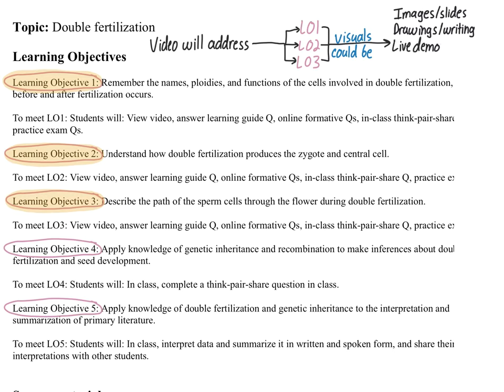Now is the time when I should decide what form I want my visuals to take. The visuals could be any number of things: images from a textbook, the internet, or photographs you take yourself; slides you've already made; drawings, writing, or typing. I usually use a mixture of mostly images and writing and drawings, but it depends on the content I'm teaching. You could do a live demonstration — perhaps a dissection or a simple physics experiment, or a lesson on how to paint a landscape — using the video recording feature of Explain Everything or by making a video with your smartphone. And you could use other videos and put them into your video.